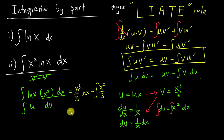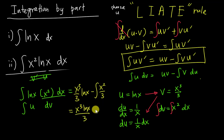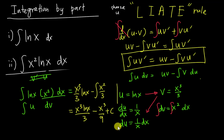So we have (x³/3)·ln(x) minus the integral of x²/3. Integrating x²/3 gives x³/9. Therefore the final answer is (x³/3)·ln(x) minus x³/9 plus C.